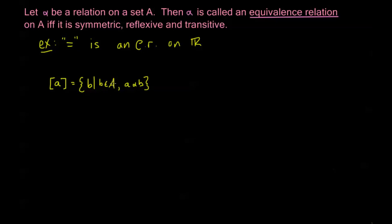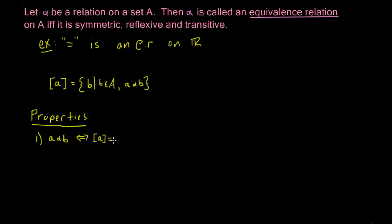There are several different properties for this equivalence class. If we have the equivalence class of A, and A alpha B, this is the same thing as saying that the equivalence class generated by A is equal to the equivalence class generated by B. These are going to be the same equivalence class, because A and B are both in the equivalence class generated by A, and I can use any representative. That's what this statement is saying — I can use any representative of the set to define the equivalence class.